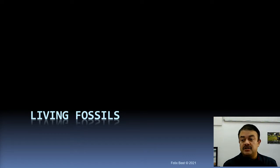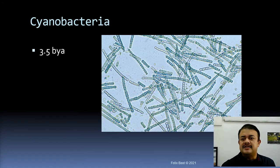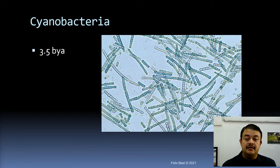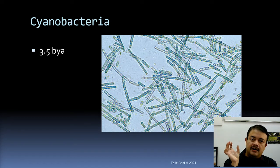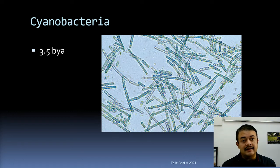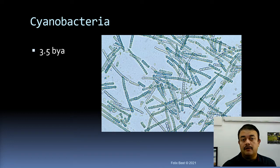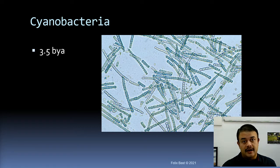Living fossils are essentially species that originated hundreds of millions of years ago and are still alive today. Cyanobacteria is one such example — it originated around 3.5 billion years ago, shortly after the origin of life itself. At the class level, cyanobacteria can certainly be considered a living fossil. Stromatolites, which are definitively cyanobacterial biofilms, represent some of the oldest fossils known.